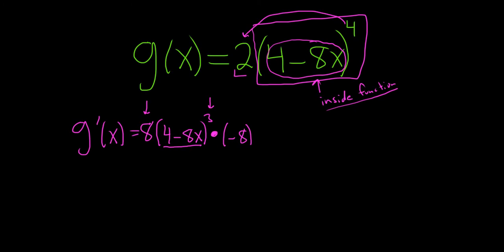Now we're almost done. Negative 8 times 8 is negative 64. So we have negative 64 parenthesis 4 minus 8x, all to the third power. And that would be the final answer.